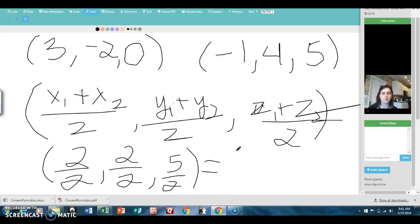So for my final answer for the midpoint, my ordered triplet is going to be 1, 1, and 5 halves. And that's it. That's how you do it.